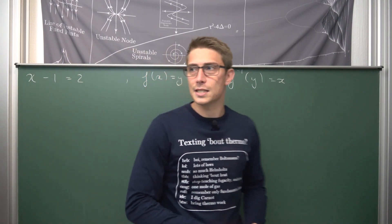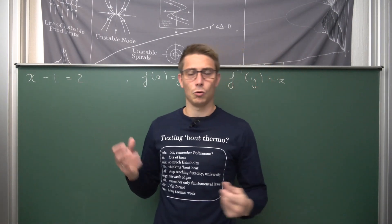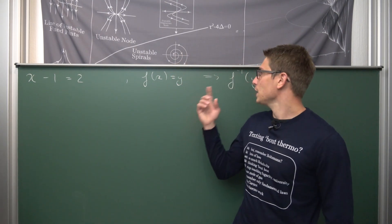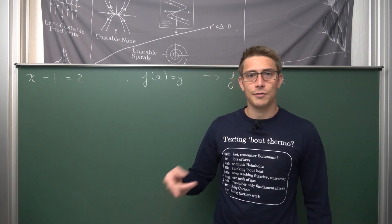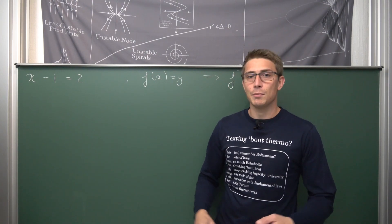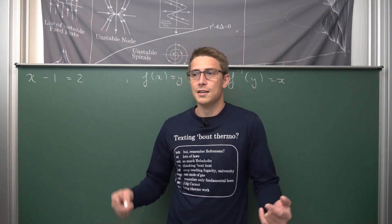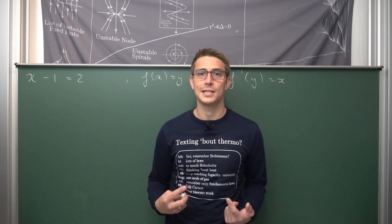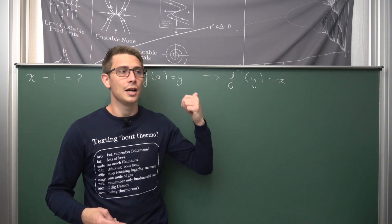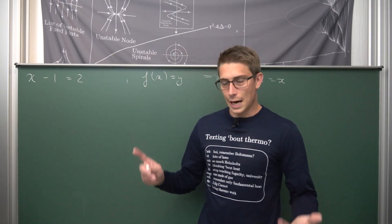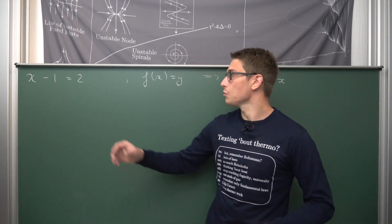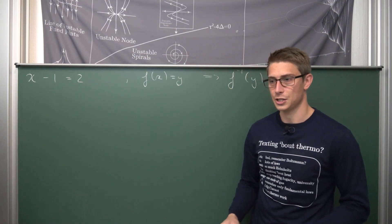In many cases we don't need the Lagrange inversion theorem — it's enough to just look at the inverse function itself and figure out the Taylor series expansion by differentiating. But for example, for the Lambert W function it's very hard to get the Taylor series expansion without making use of the Lagrange inversion theorem, also known as the Lagrange–Bürmann theorem. We can also use it to solve simple or harder polynomial equations.